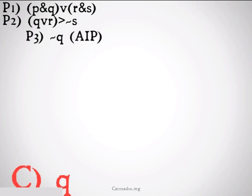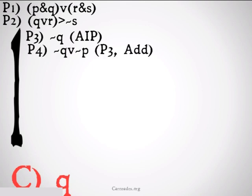So we're going to assume not q for AIP, our assumed indirect proof. And just like conditional proof, we're going to draw a line going down the side. From that we can get not q or not p, premise 3, addition.